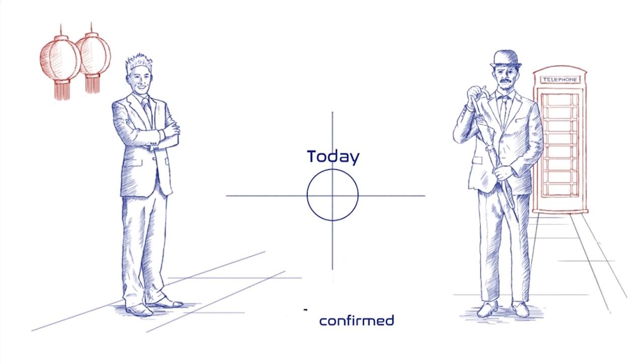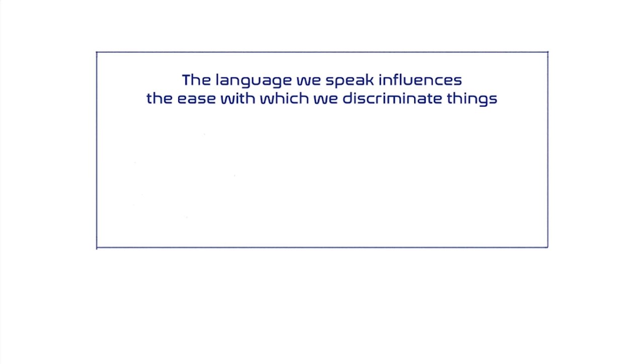The fact that language plays a role in modifying our perception, in shaping our thought and in creating reality is undeniable. So far the scientific research shows that the language we speak influences the ease with which we discriminate things through the richness of the categories it contains. In this video we have described how language shapes the way we think about color, space and time.